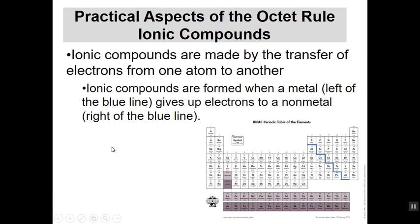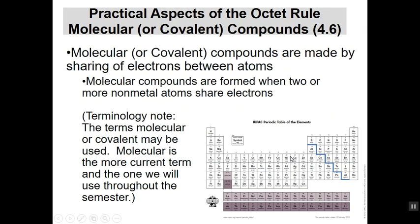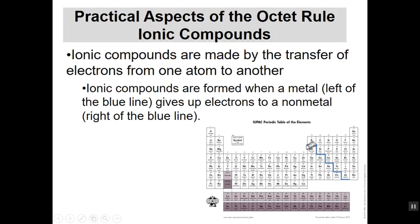Let's think about the practical aspects of this. Ionic compounds are made by the transfer of electrons from one atom to another. You're giving up or you're taking on. Think about forming ionic compounds. Here's our periodic table at the bottom. Here is my stair step line separating metals over here from non-metals on this side.